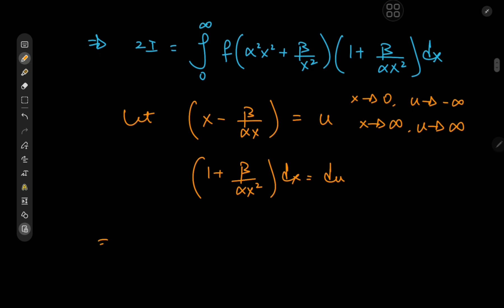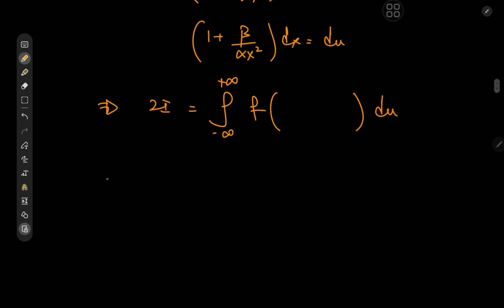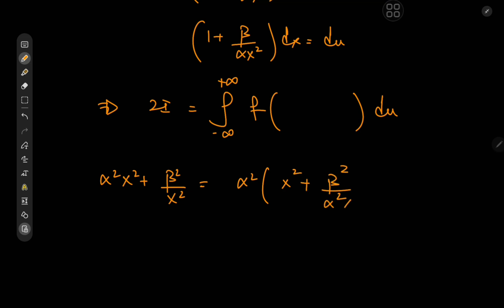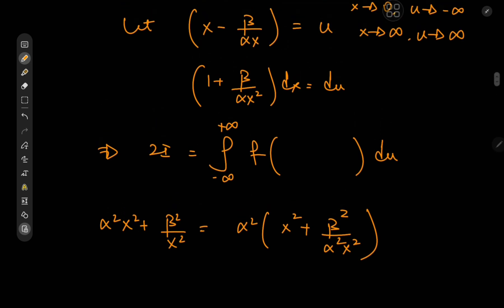So this implies that 2I equals the integral from negative to positive infinity of f of something du. Now what exactly is that something? We have alpha squared x squared plus beta squared divided by x squared — we could factor out the alpha squared term. We have alpha squared times x squared plus beta squared divided by alpha squared x squared. This looks pretty close — we have the squared terms, but we need a minus sign between them and no squares.